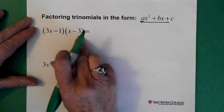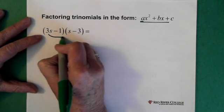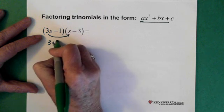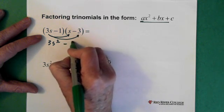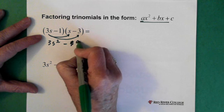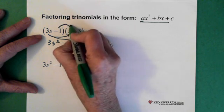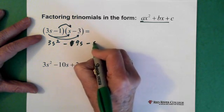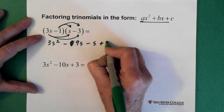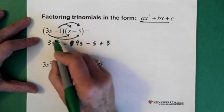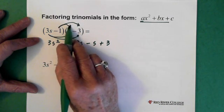So if we have two factors here and we multiply them together, we have 3s times s, which gives us 3s squared. Then 3s times minus 3, which gives us minus 9s. And then 1 times s, so we end up with minus s. And then minus 1 times minus 3, which gives us plus 3. This method is the FOIL method: the first, the outer, the inner, and the last.